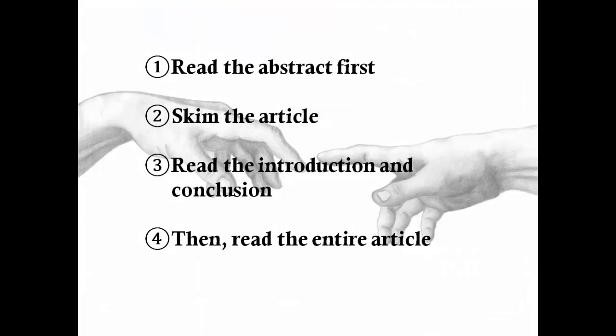Here are a few suggestions before we get started. Read the abstract first — this should give you a complete overview of the article. Skim the article to get a sense of the sections and general contents. Read the introduction and then skip to the conclusion or discussion section. This will help you get an overall sense of the article and whether or not it is relevant to your research. If the article looks like it will be useful, then read the entire article carefully.